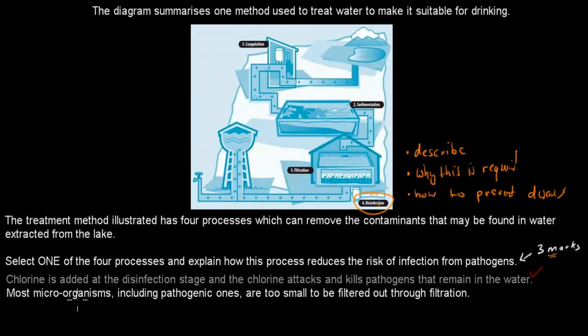Then what I did is: most microorganisms, including pathogenic ones. The reason why I wrote pathogenic ones is because if you only write microorganisms, then you might have actually missed the crux point. So you have to make sure that you also include the word pathogen somewhere, so that you're not just saying you're filtering out microorganisms, but actually ones that might cause disease. Most microorganisms, including pathogenic ones, are too small to be filtered out through filtration. So this is why this is required, because the steps beforehand wouldn't have gotten rid of the microorganisms or most of them.